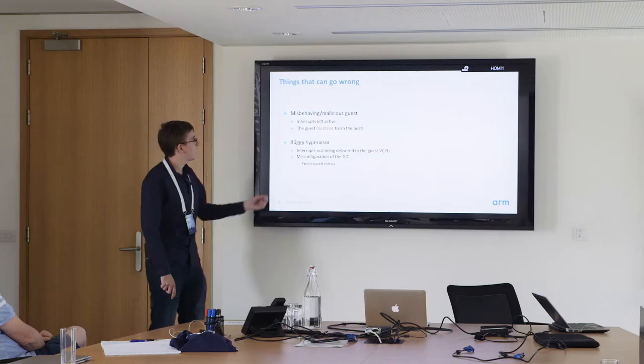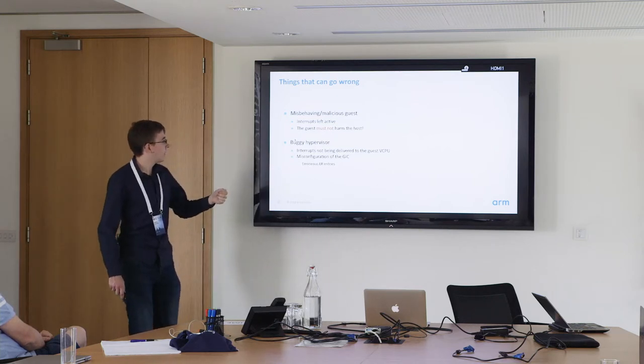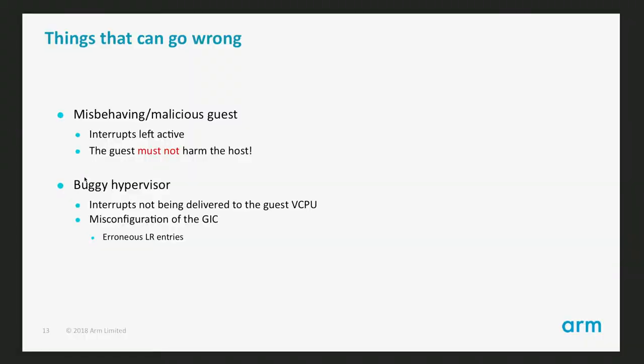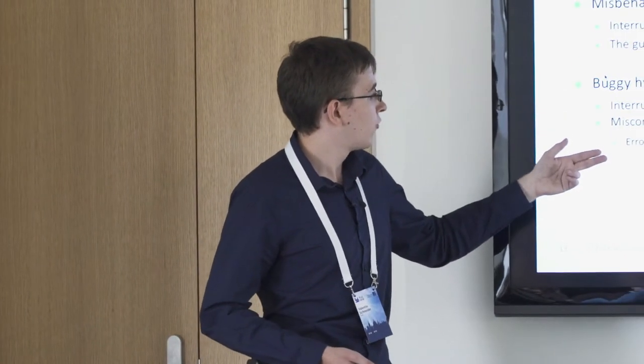If the guest is misbehaving or malicious it can leave interrupts active. If real interrupts from the distributor are left active, the guest can have an impact on the real system — that must not happen. As for a buggy hypervisor, it could never write interrupts into the list registers that the guest expects, causing it to essentially stop working. Or it could write entries in the list registers for interrupts the guest should not see.